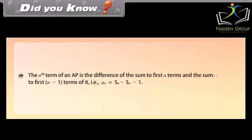Did you know? The nth term of an AP is the difference of the sum to first n terms and the sum to first n minus 1 terms of it, that is, an = Sn minus S(n minus 1).